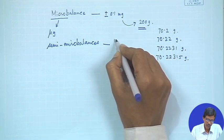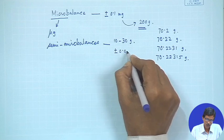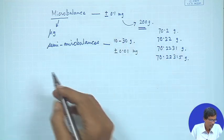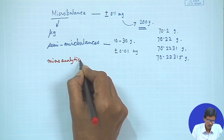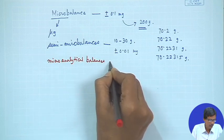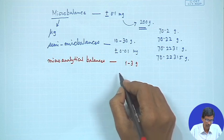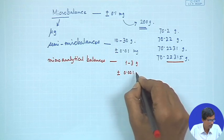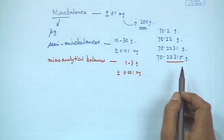Semi-micro balances have a range of 20 to 30 grams and accuracy of 0.01 milligram — compared to 0.1 milligram for the microbalance. Then we can have micro-analytical balances where the maximum weighing capacity is 1 to 3 grams, but the decimal place goes up to 0.001 milligram. These are the ways how accurately we can weigh out all these samples, which depends on how small a sample we are handling.